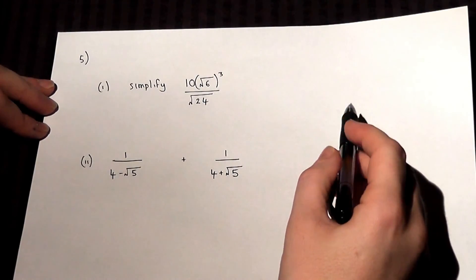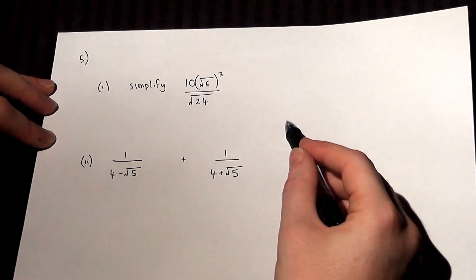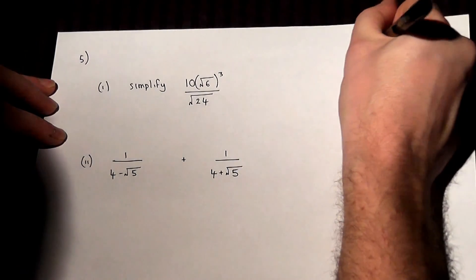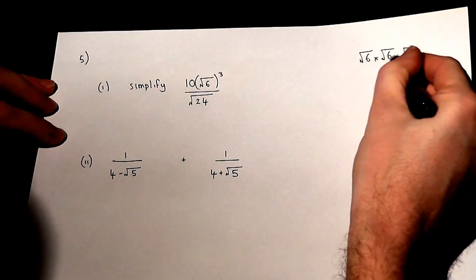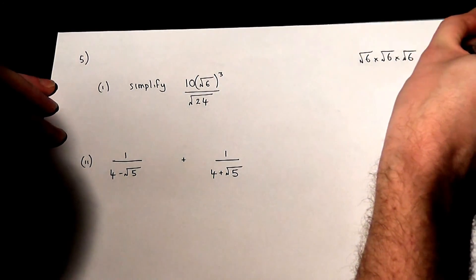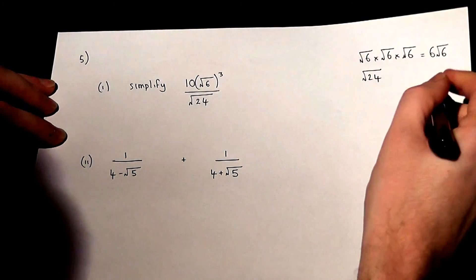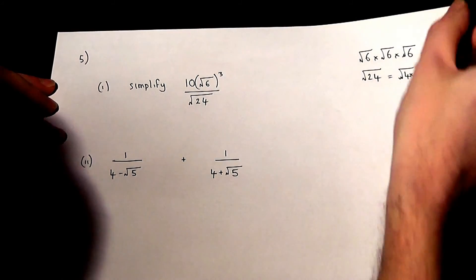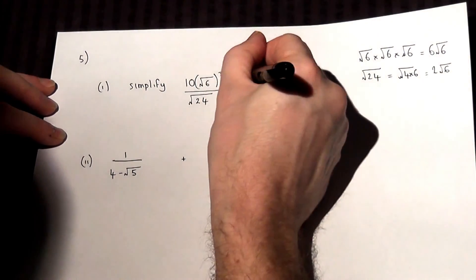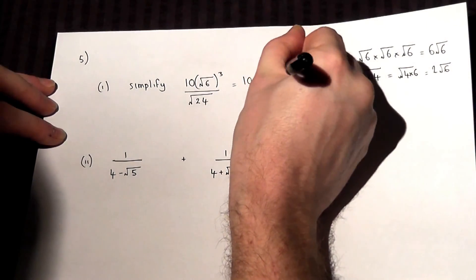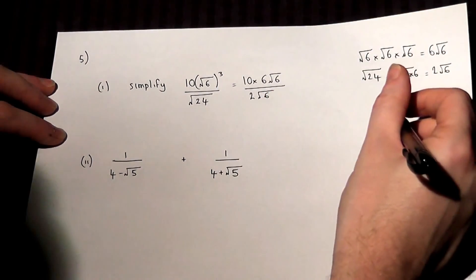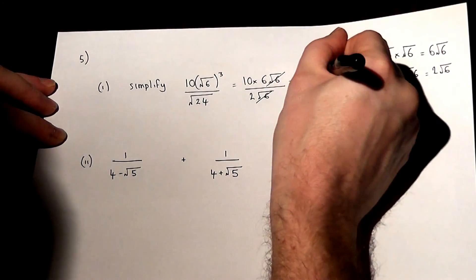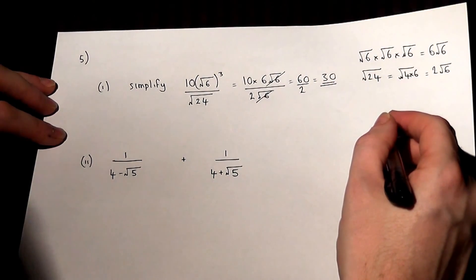This question has two more challenging surd problems. The first asks to simplify a fraction. Root 6 cubed means root 6 times root 6 times root 6: the first two multiply to give 6, so it equals 6 root 6. Root 24 also simplifies: it's root of 4 times 6, and root 4 is 2, so it's 2 root 6. The expression becomes 10 times 6 root 6 over 2 root 6; the root 6s cancel, giving 60 over 2, which equals 30. The final answer is an integer.